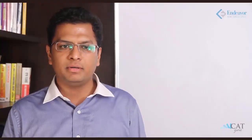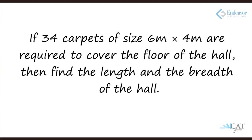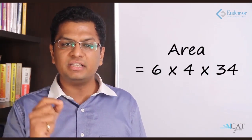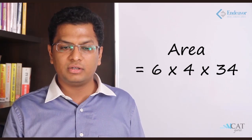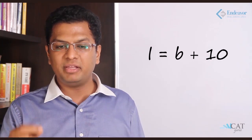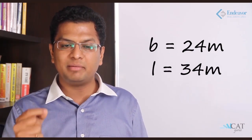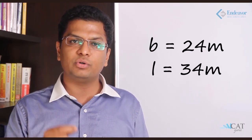Let's have a look at another example. The length of the floor of a rectangular hall is 10 meters more than its breadth. If 34 carpets of size 6 meters by 4 meters are required to cover the floor of the hall, find the length and breadth of the hall. The size of each carpet is 6 meters by 4 meters, so the total area is 6 into 4 into 34 carpets, which equals length into breadth. Breadth is B and length is B plus 10. From this we calculate that B equals 24 and length equals 34 meters.